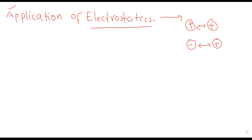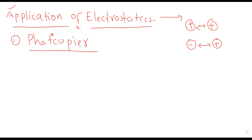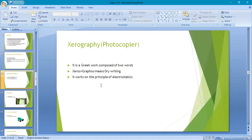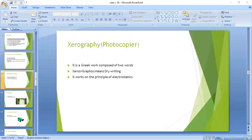The fundamental machine we are going to discuss in today's lecture is the photocopier machine. You have all seen a photocopier machine — basic laws of electrostatics are used in it. Photocopier machine works on a process named as xerography. The word xerography is composed of two Greek words: 'xeros' and 'graphe', and when both are combined it means 'dry writing'.